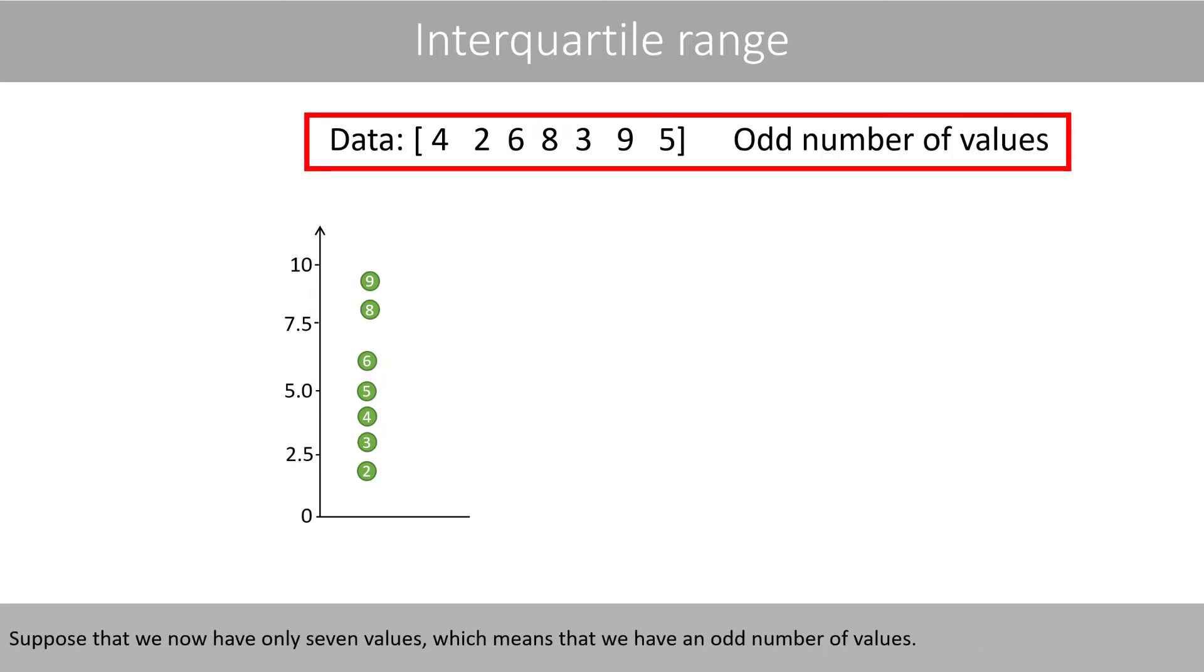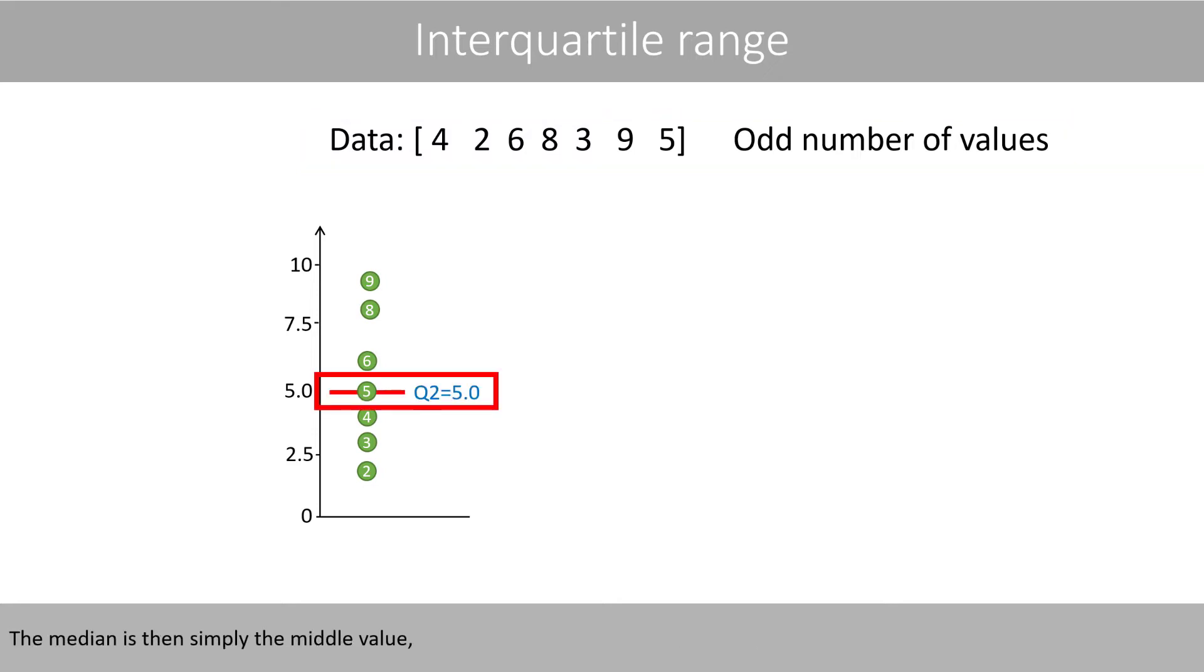Suppose that we now have only 7 values, which means that we now have an odd number of values. The median is then simply the middle value, and the lower quartile is now the middle value of the lower part, whereas the upper quartile is the middle value of the upper part. The interquartile range within this example would also be equal to 5.